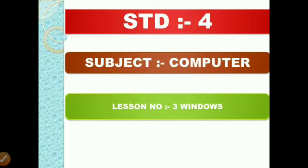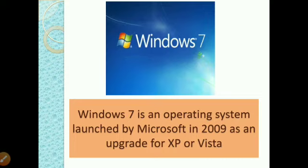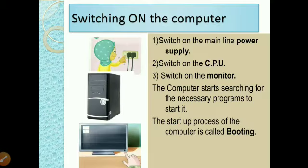Standard fourth subject computer lesson number three. Windows 7 is an operating system which was launched by Microsoft in 2009 as an upgrade for XP or Vista. Upgrade means like the updates we do on our mobile apps — similarly, all windows and other functions in our computer receive upgrades which we have to do on time.